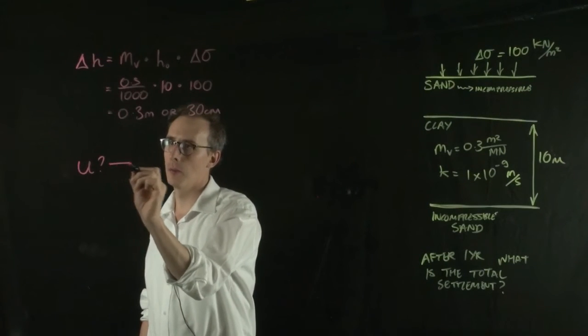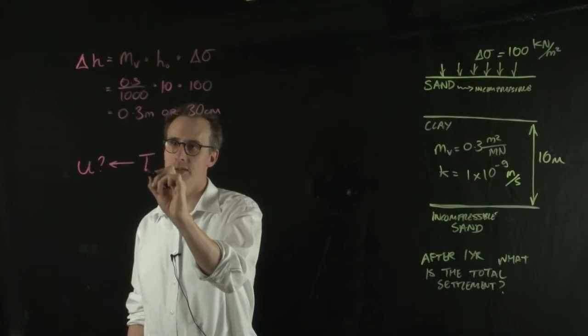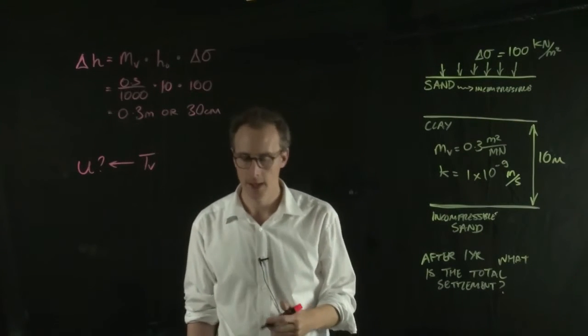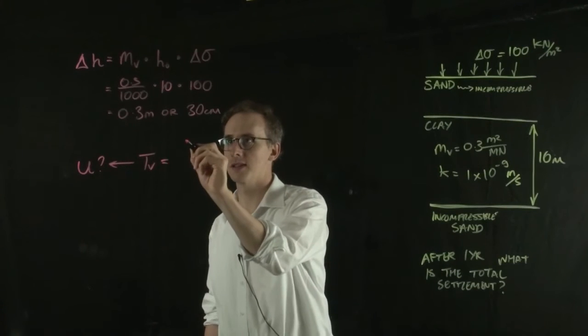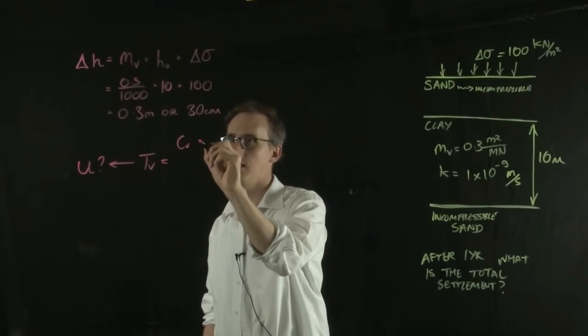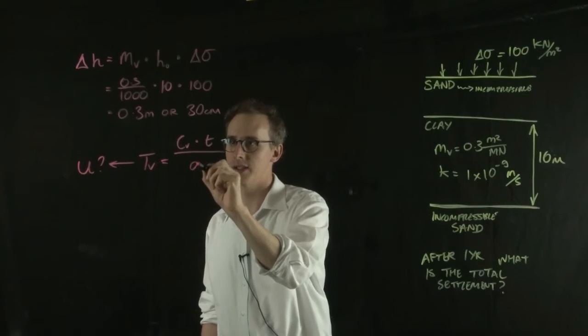So what is U after one year? So we need to work backwards this time from the TV value. So we need to find out what our TV value is, and we do that using this equation, CV multiplied by T over D squared.